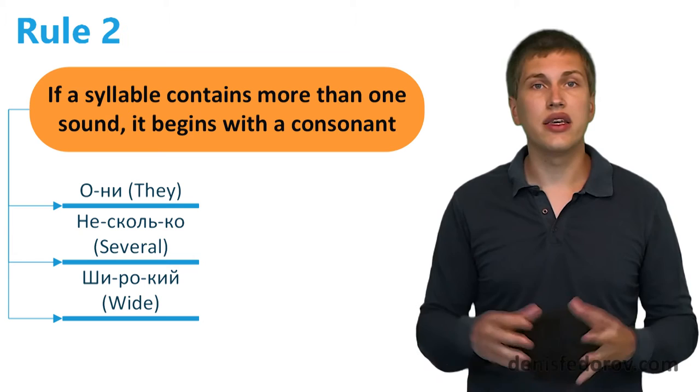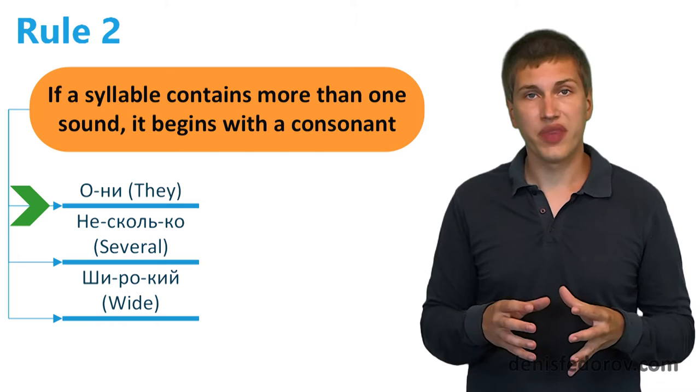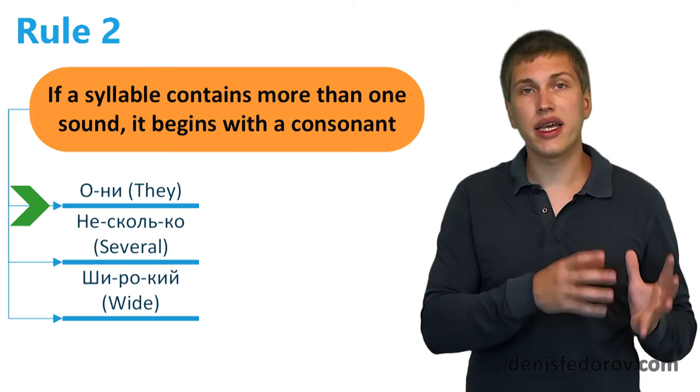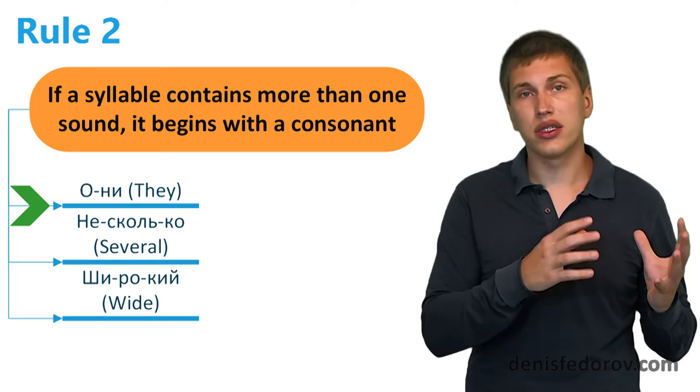OK, the second rule says if a syllable contains more than one sound, it begins with a consonant. Here are examples to this rule. Let's take the word ОНИ. According to the first rule, there are two syllables in this word because there are two vowels. The first syllable is О, and the second is НИ. The second syllable has two sounds. That's why it begins with a consonant, Н.